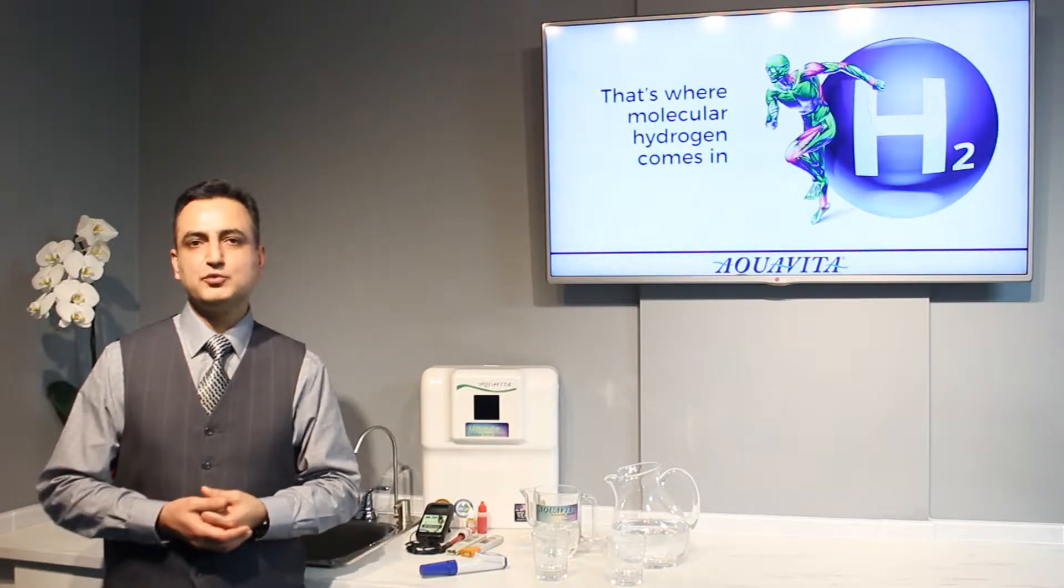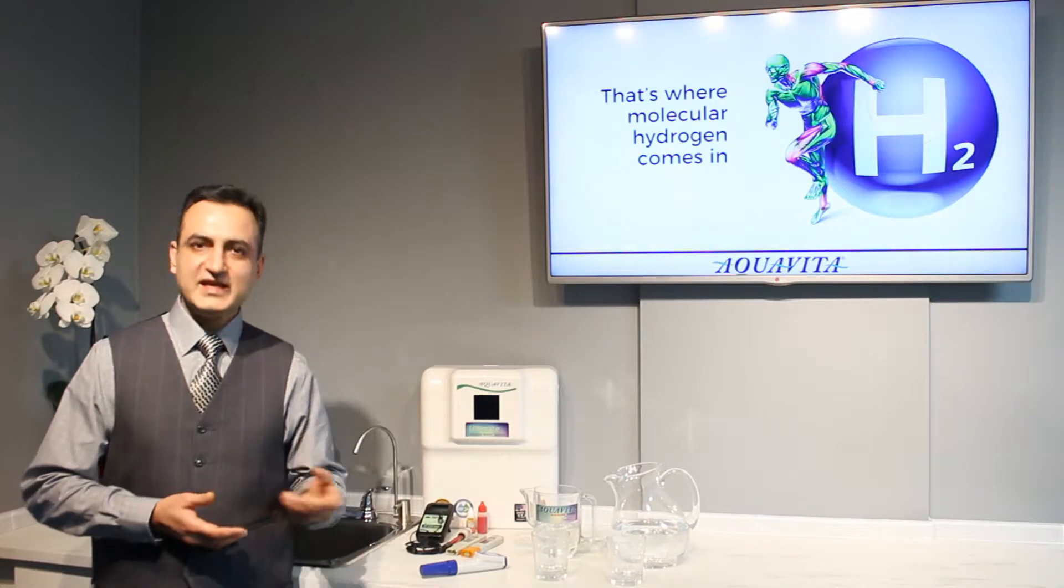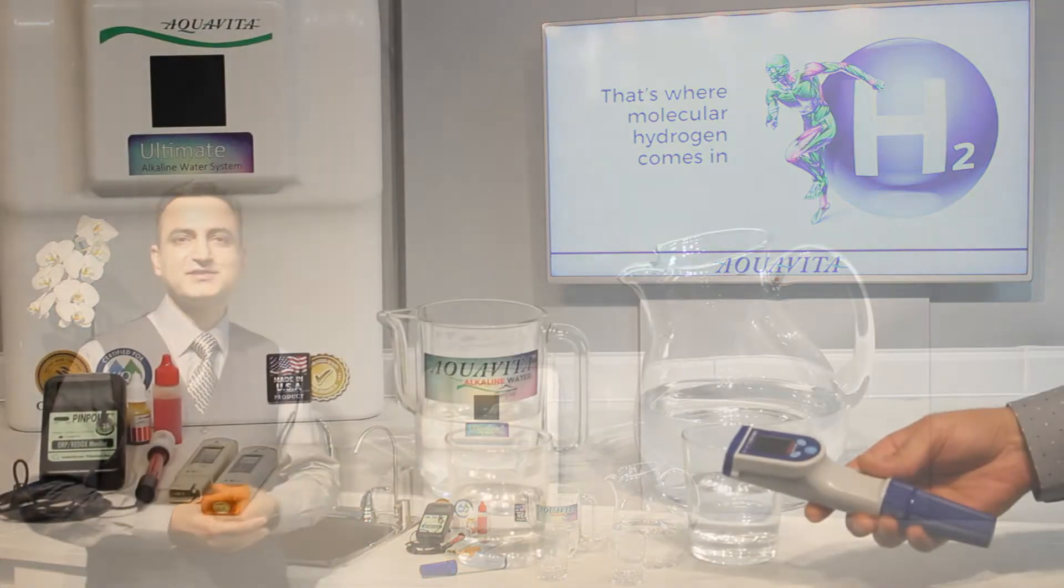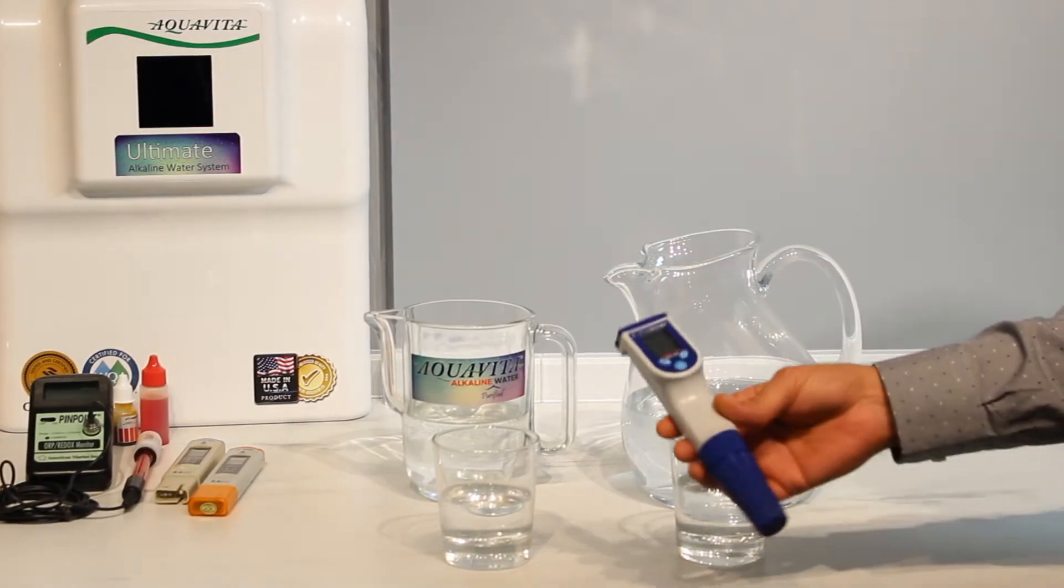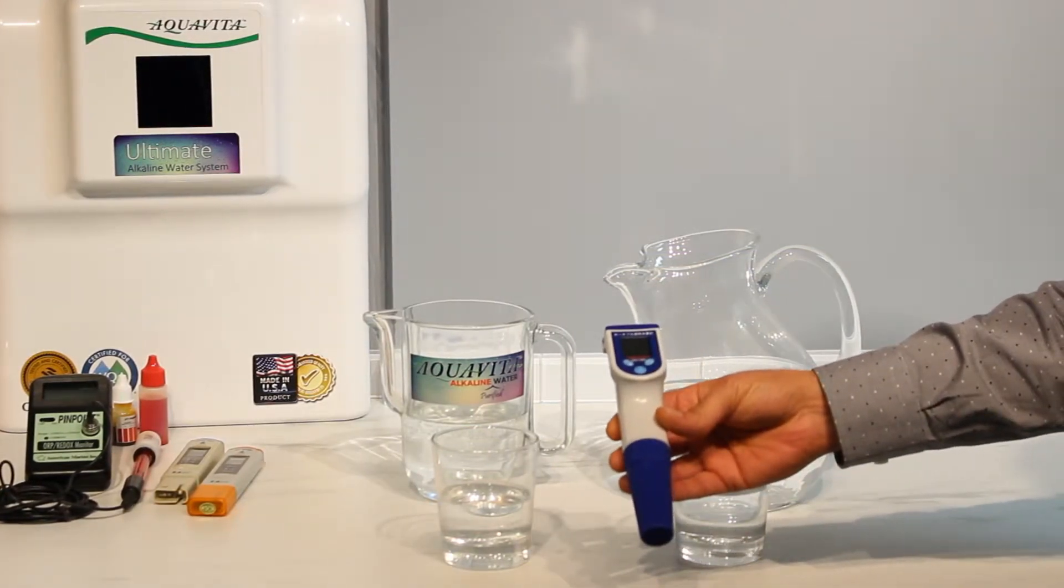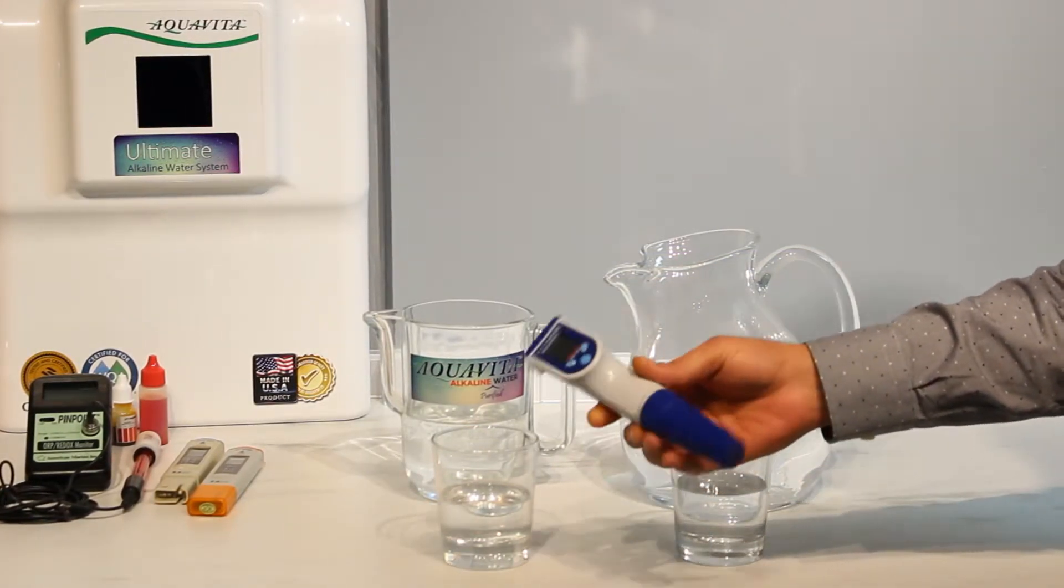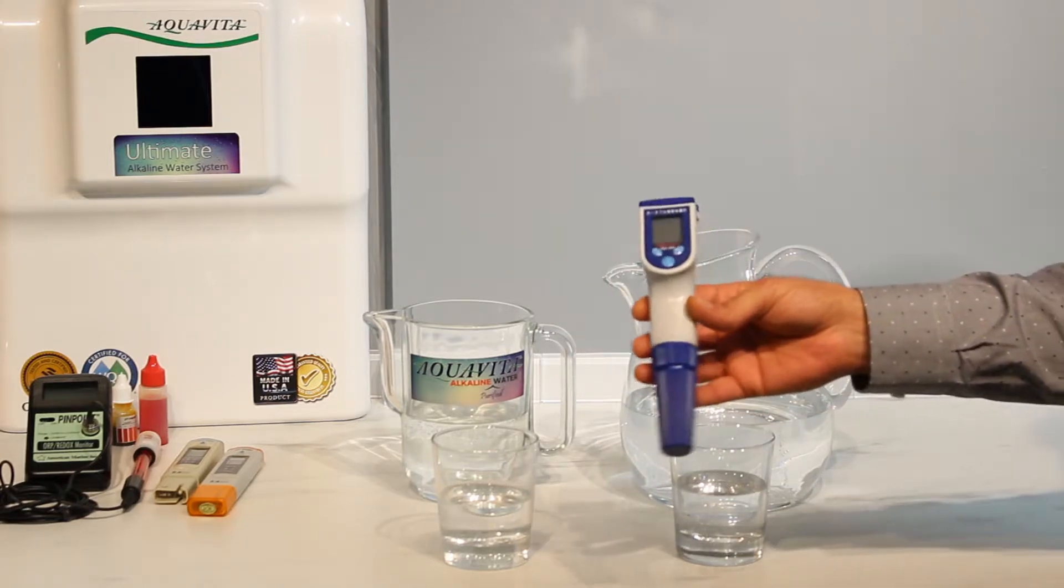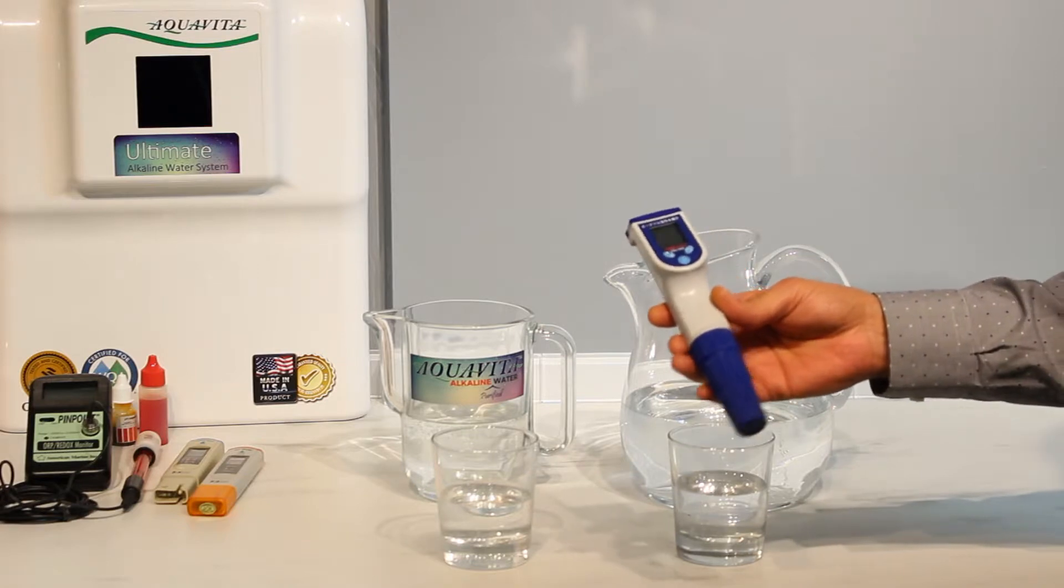Let's measure how hydrogen-rich the Aquavira water is. This device is called a dissolved hydrogen meter, and I'll use it to measure the number of dissolved hydrogen in water. This is measured in parts per billion, or ppb.